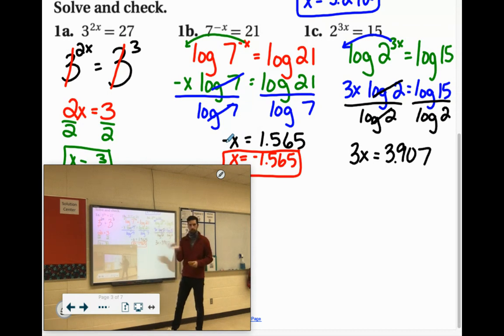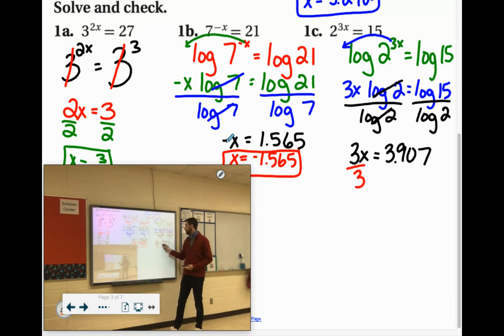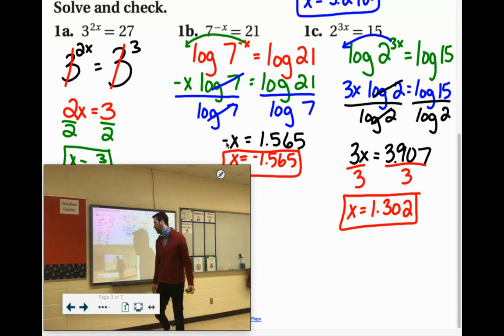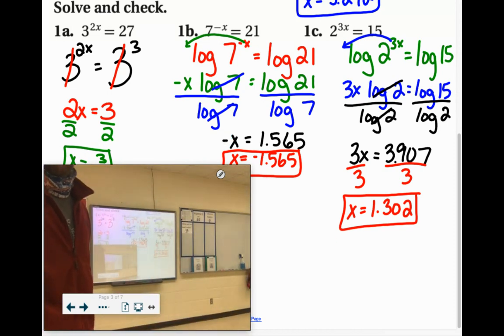And again, that's just a rounded decimal. We don't want 3x. We want x. So we're going to have to divide by 3. Which comes out to x equals 1.302. They're tough. You've got to be comfortable solving your equations, kicking exponents to the front.